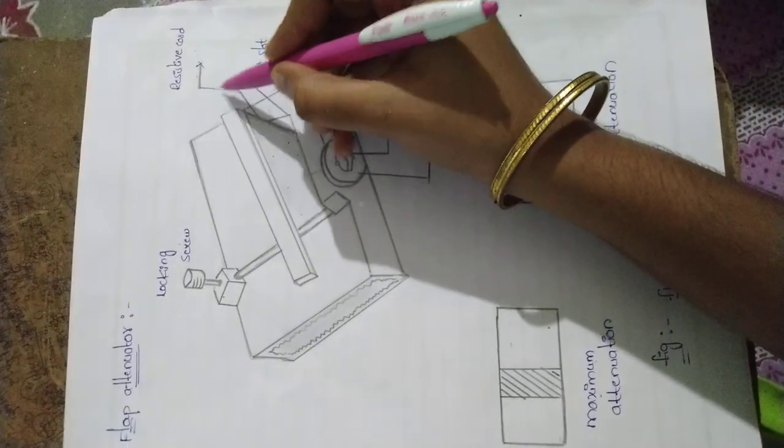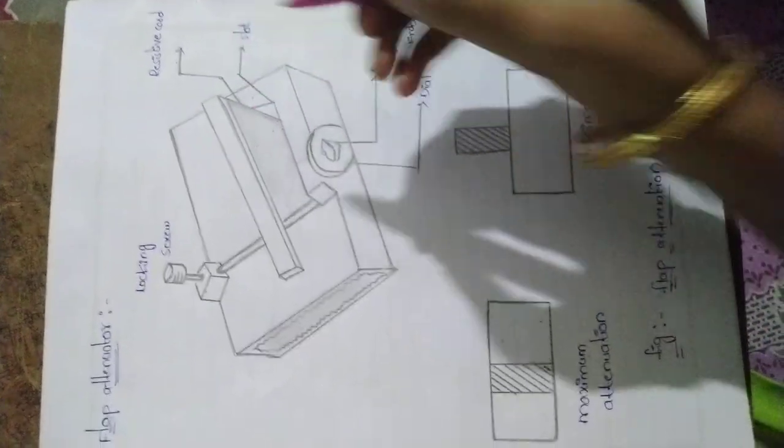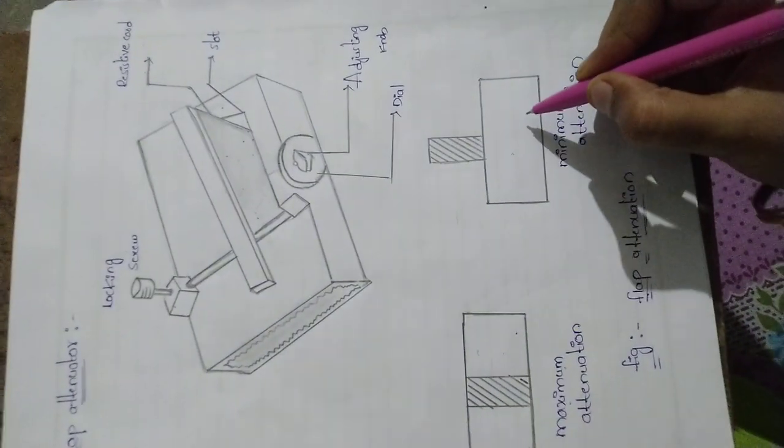If the resistive cord is in initial position, minimum attenuation will occur.